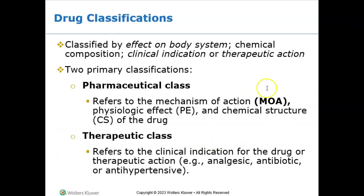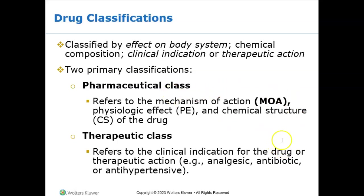Drugs are classified by how they affect the body system, how they're made up, the way they are used, or the clinical indication — what they're being used to treat. There are two primary classifications: therapeutic class, which treats symptoms or the root cause of what's going on, and pharmacological class based on mechanism of action or chemical structure. The mechanism of action is how the drug works on the body; the therapeutic class is what it's doing or treating.